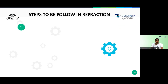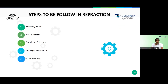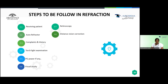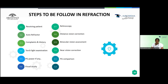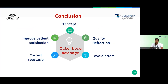To recap, the 13 steps are: receiving the patient, auto refractometer, complaints and history, torchlight examination, present glass power, visual acuity, retinoscopy, distance vision correction, binocular vision assessment, near vision correction, PG comparison, monocular pupillary distance, and spectacle counseling. Follow these 13 steps to do quality refraction, avoid errors, give a correct prescription, and improve patient satisfaction. Thank you.